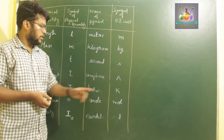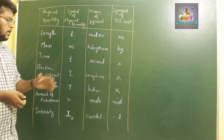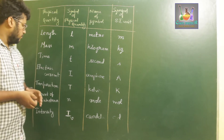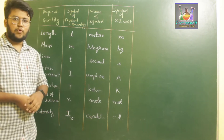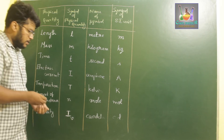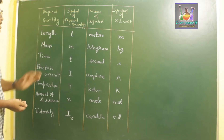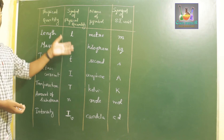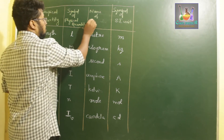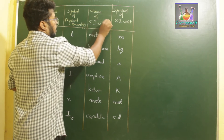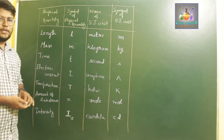For electric current, the unit is ampere (A). For temperature, the SI unit is Kelvin — in India we use degrees Celsius, but internationally Kelvin is used. For amount of substance, the unit is mole (mol), and for luminous intensity the unit is candela (cd). These are the seven basic physical quantities and their respective SI units.